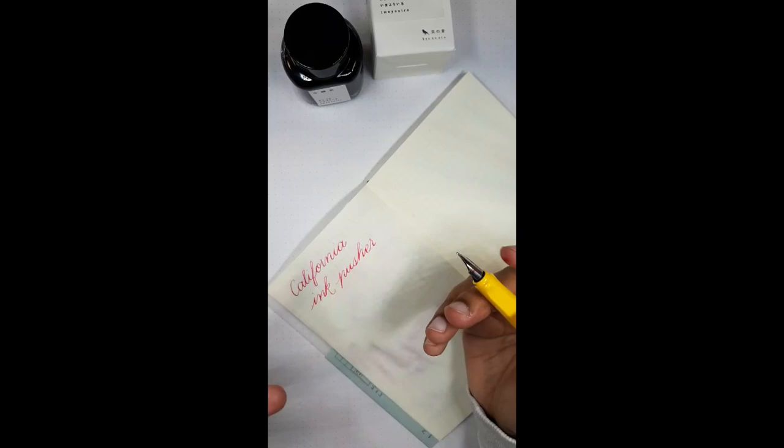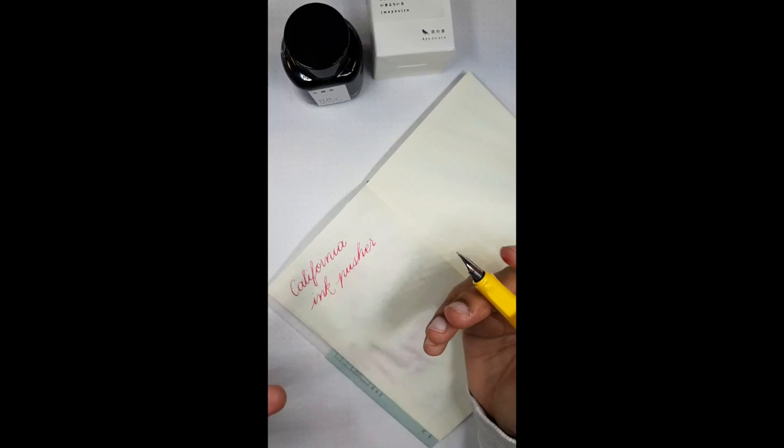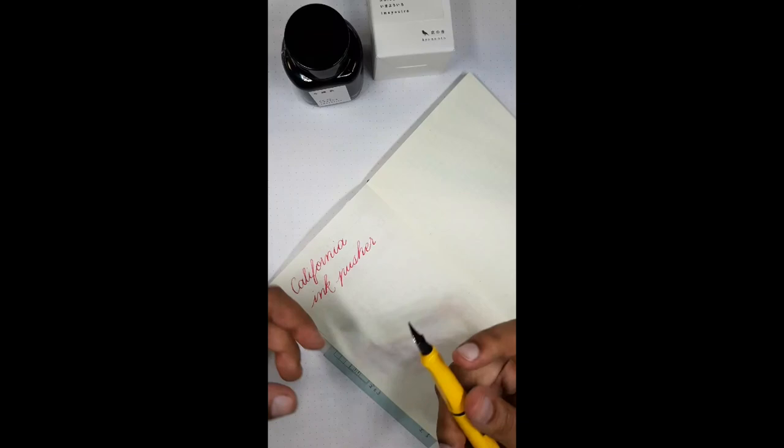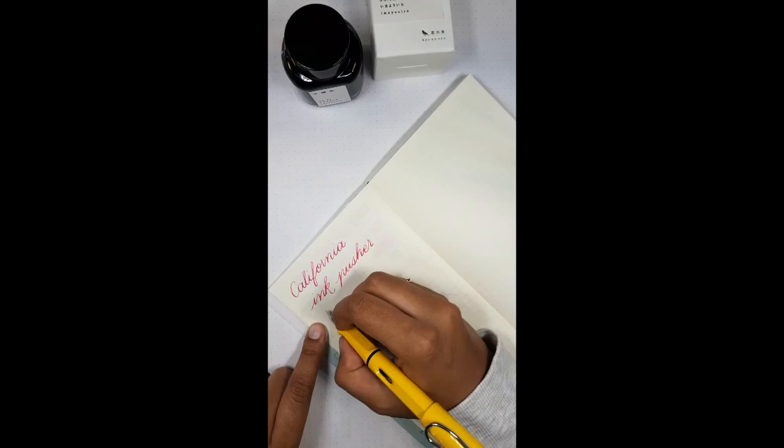Yes, oblique nibs. If you do need an oblique nib you can always just pick up one of those. I think it's like 10 bucks, a couple bucks to add on a nib to your pen. They're great and they're interchangeable, you just pop them off super easy.